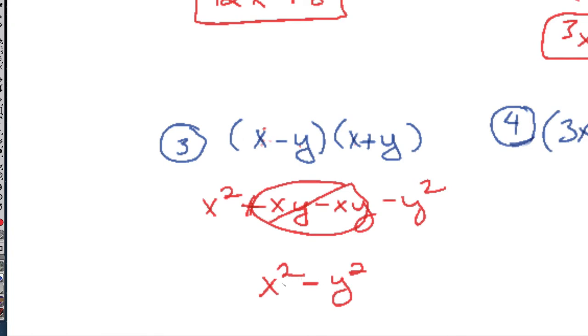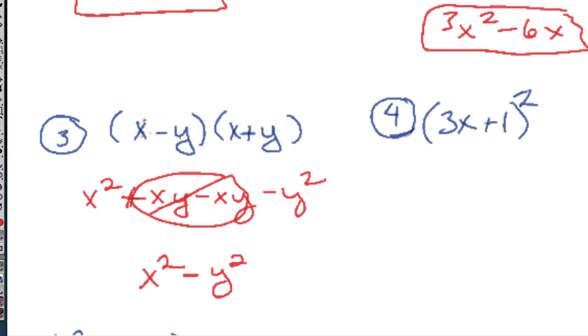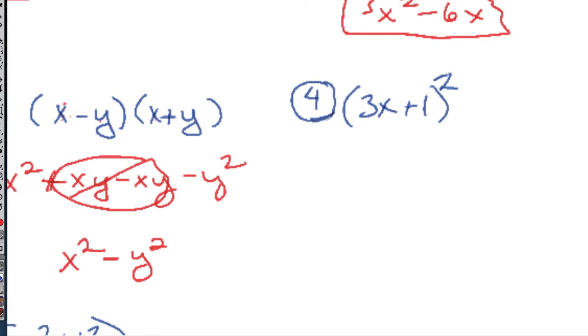So if you see a difference of two squares and you want to factor and go backwards, it's always just take the square root, take the square root, put a plus in one, minus in the other. Okay? So we will see that again.